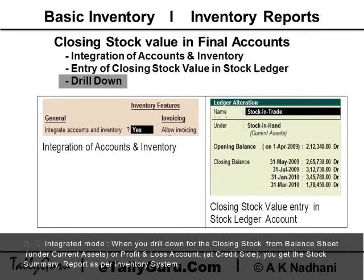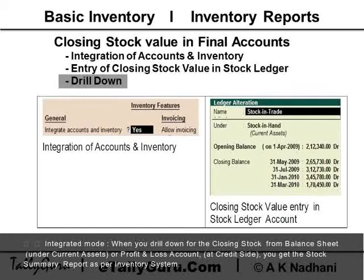In integrated mode, when you drill down for the closing stock from the balance sheet under Current Assets, or from the Profit and Loss account on the credit side, you get the Stock Summary report as per the inventory system.